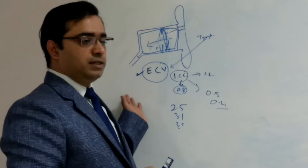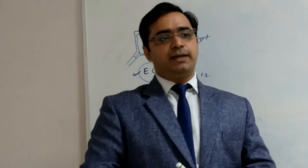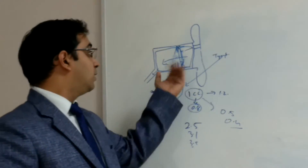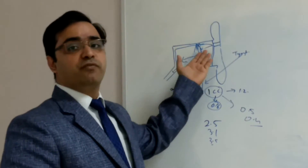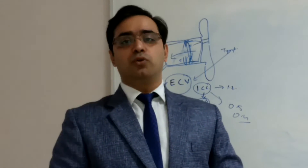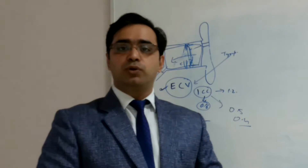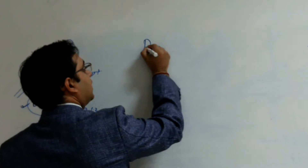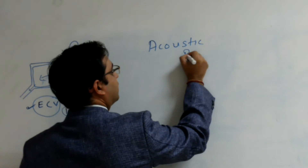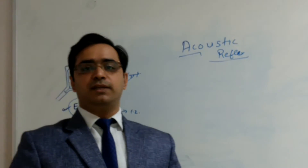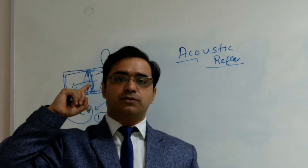So this canal wall volume helps you differentiate other conditions. Now, we said impedance helps us in diagnosing middle ear conditions, and external canal wall volume helps in diagnosing tympanic membrane perforation. But is impedance having a role only in middle ear diseases? No. Impedance also has a role in diagnosing various nerve conditions — and that is because of the acoustic reflex. The acoustic reflex: I give a loud sound to one ear, and my stapedius contracts to protect my inner ear — that is the acoustic reflex.